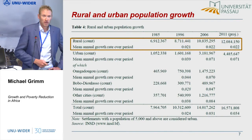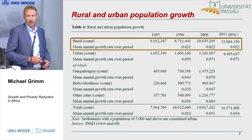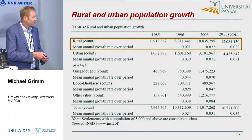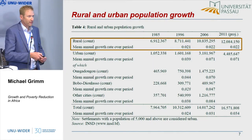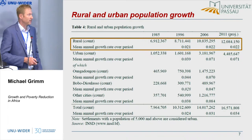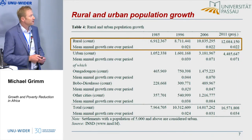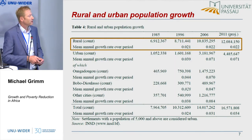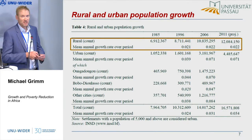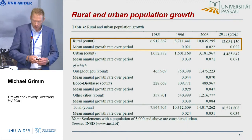Here are a few numbers on population growth. The total fertility rate is still very high in Burkina Faso — around five. The rate of population growth, depending on the period, is between 2.5 and 3.5 percent, even going up recently as mortality declined. In rural areas it's about 2%, showing many people are leaving the countryside. In urban areas, particularly more recently, we see a growth rate of 7% in Ouagadougou, the capital, and also in the second city, Bobo-Dioulasso. Smaller towns show 8% — a massive urbanization.